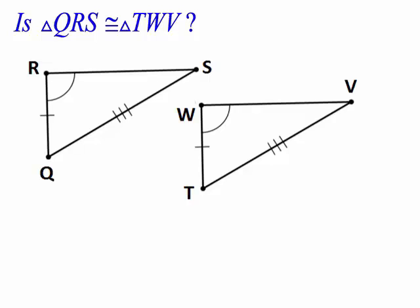So let's see if this passes the test of using hypotenuse leg theorem for determining if these two triangles are congruent. Is QRS congruent to TWV? Well, I've got what looks like a leg congruent, what looks like a hypotenuse congruent, but you don't know if those are right angles or not. So since we don't know that, we can't make the conclusion that those two triangles are congruent.